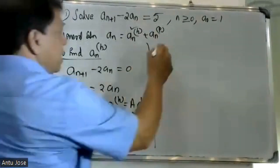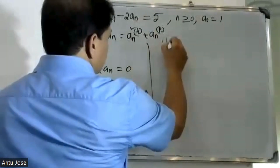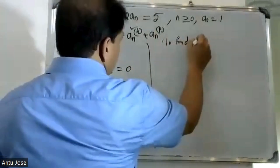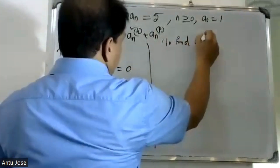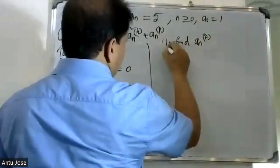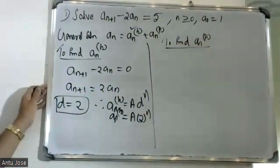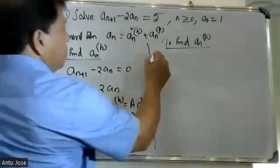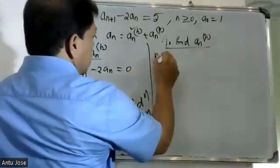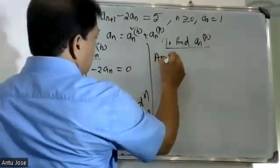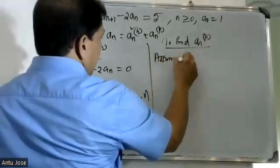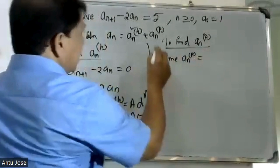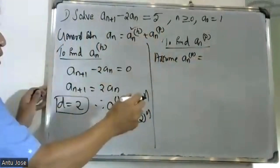To find the particular solution a(n)^p, we assume a(n)^p is equal to a constant A, since the right-hand side is a constant.